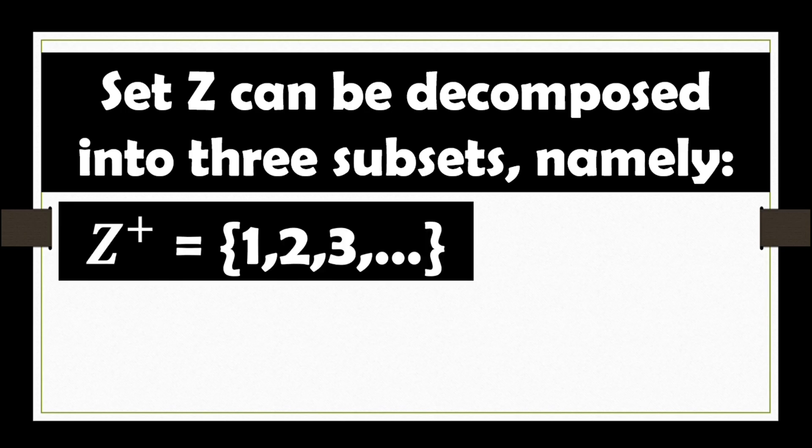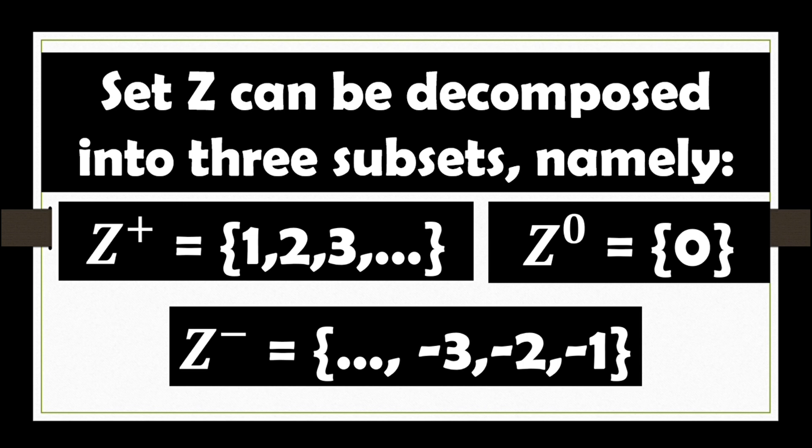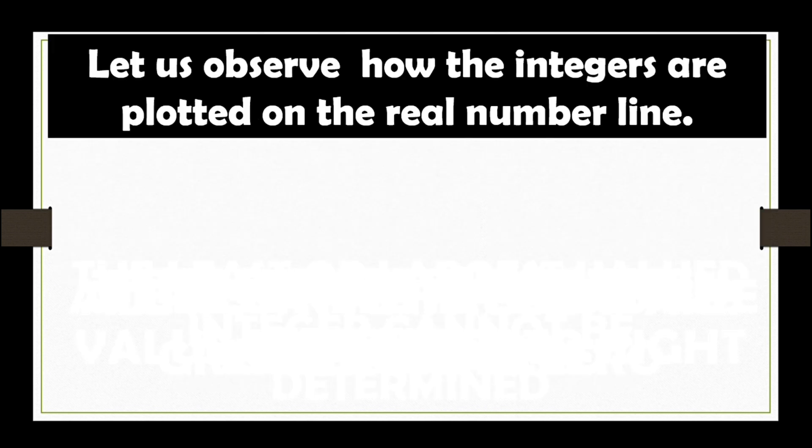And these are Z positive, which includes 1, 2, 3, and all positive integers. Z negative, which consists of elements from negative 1, negative 2, negative 3, until negative infinity. While the third subset is a unit set with an element of 0. Let us observe how the integers are plotted on the real number line.